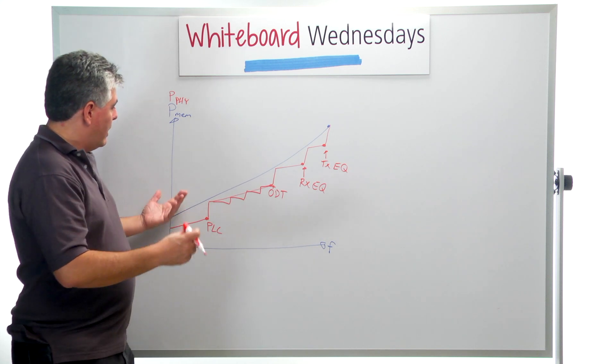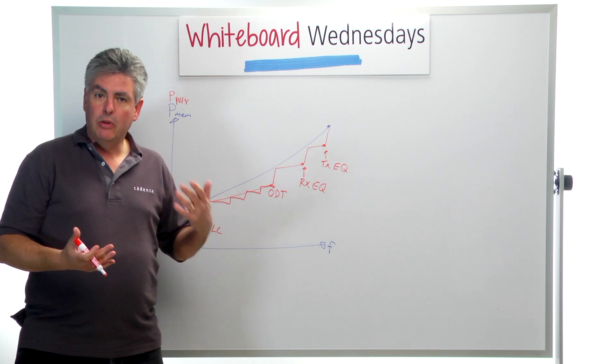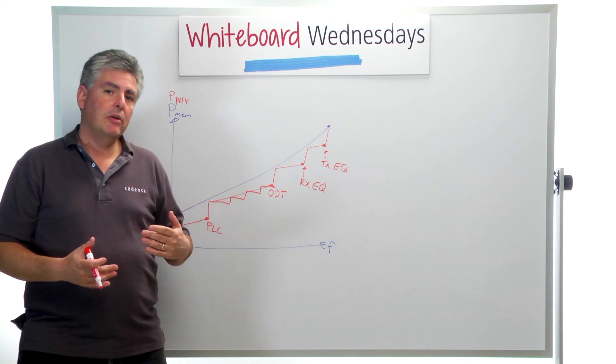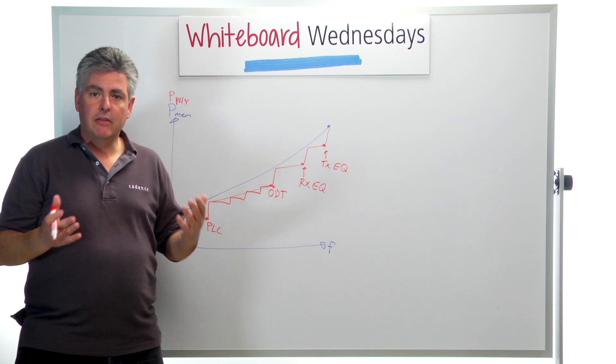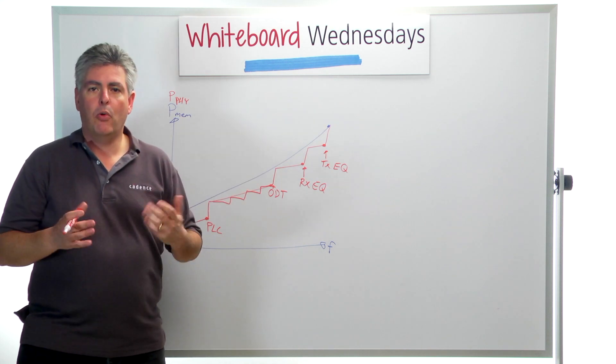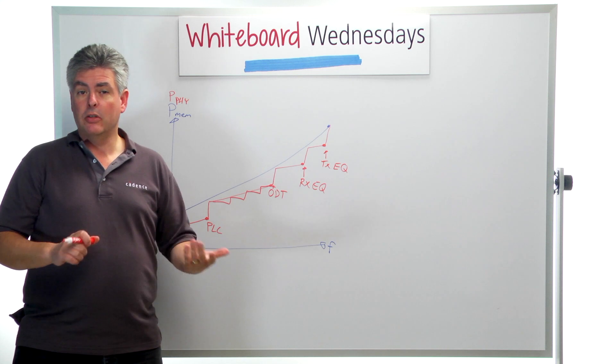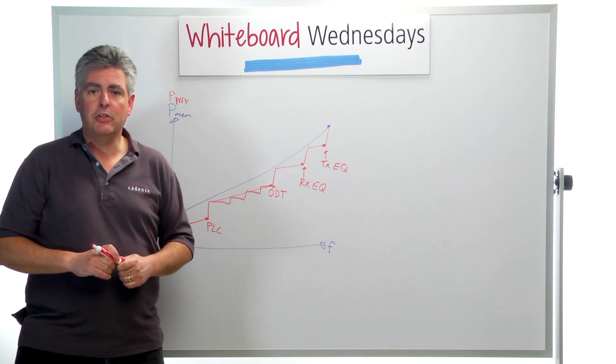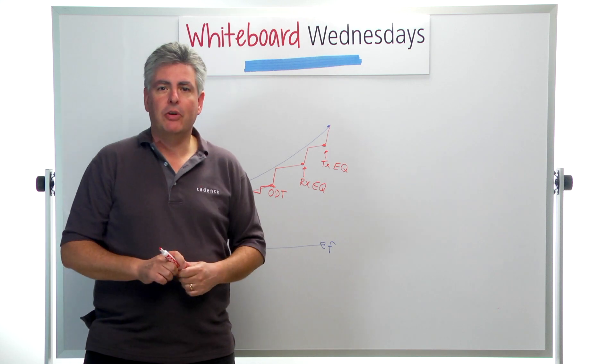So in a nutshell, you can use your PHY low power features to be able to reduce the power capability of the PHY at different frequencies. And you should choose your frequency operating points according to the frequencies at which it's necessary to turn on or off those different features. So with that, that's another Whiteboard Wednesday and we hope you'll join us for another one soon.